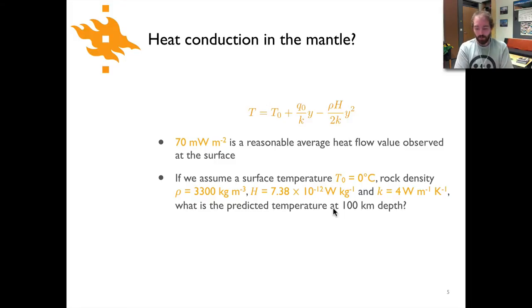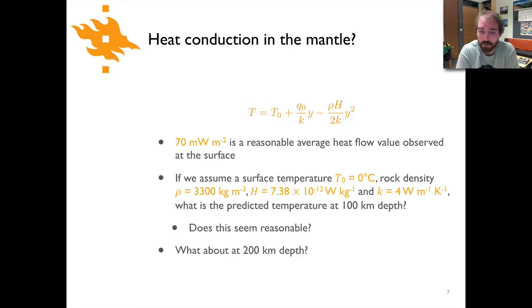Hopefully you've got yourself a number that seems reasonable. The question of course is does that number actually make sense? Is it something that could be a temperature in the earth at 100 kilometers depth? But what happens if you go to 200 kilometers depth? What kind of temperature do you get now? Go ahead and pause the video again, do your second calculation, and come back when you've got yourself a number at 200 kilometers depth.